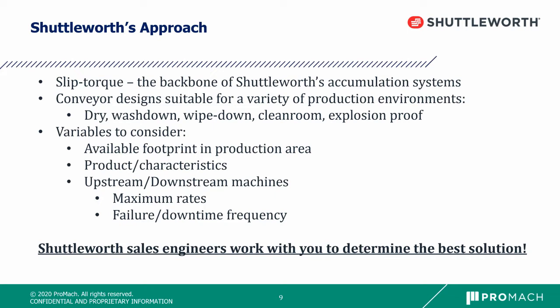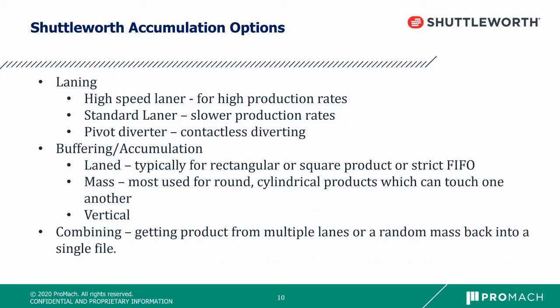It's important to know the available floor space, the product and its characteristics, and what the machines on the production line do and how they run most efficiently. When you engage a Shuttleworth sales engineer, we will work with you to understand these variables and identify a solution to fit your needs. Now let's look at some real-world examples of how Shuttleworth can help solve your problems. First, we will discuss how we divide the flow of products to additional lanes for accumulation. You will see examples of lane accumulation, mass accumulation, and vertical accumulation in case floor space is tight. Then we will show you how we combine the accumulated product back to a single file to go into the downstream equipment.